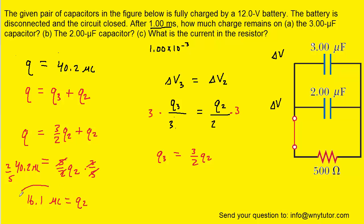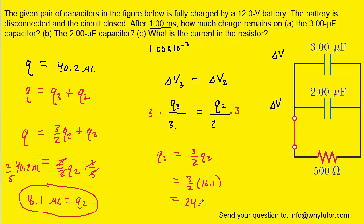Now that we have Q2, we can find Q3 by plugging in our known value for Q2, giving approximately 24.1 microcoulombs for the charge on the 3 microfarad capacitor. This represents the answer to Part A of the question, and 16.1 microcoulombs is the answer to Part B.